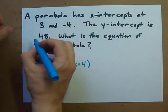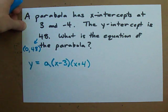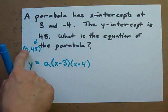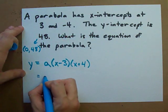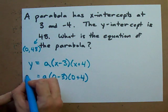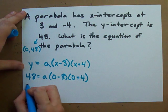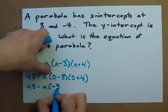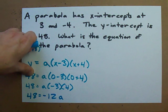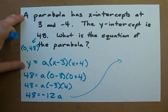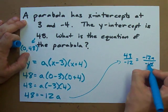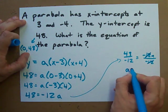We're given that the y-intercept is 48, meaning the point (0, 48) is on the parabola — when x is 0, y is 48. Plugging in 0 for x and 48 for y: 48 equals a times negative 3 times positive 4. Multiplying those together gives negative 12a. To solve for a, divide both sides by negative 12 — negative 48 divided by negative 12 equals negative 4.